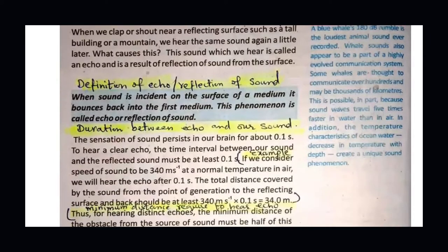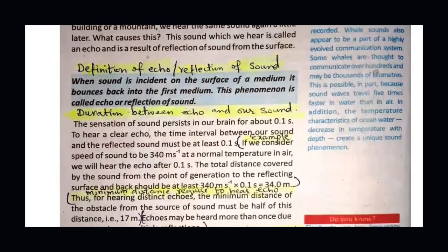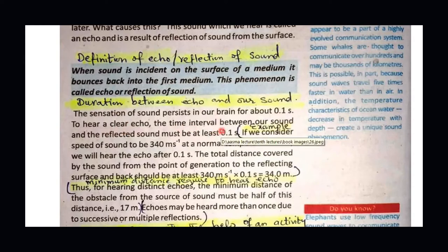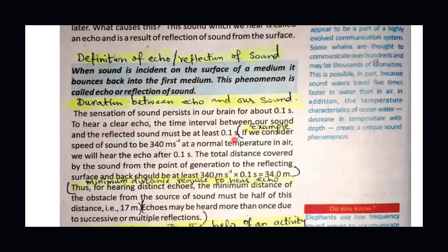For echo to be heard, there must be a duration of at least 0.1 seconds between the original sound and the reflected sound. Our brain takes 0.1 seconds to distinguish sounds. So if the reflection arrives within less than 0.1 seconds, our brain will not be able to detect it separately. After 0.1 seconds, when the reflection happens, we hear a clear echo. So the time interval between sound and reflected sound must be at least 0.1 seconds.